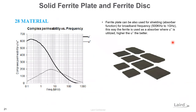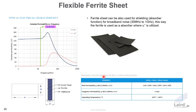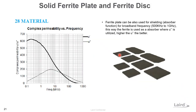Laird also offers solid-state ferrite plates and ferrite disks, similar to ferrite sheet solutions, functioning as absorbers for a similar frequency range up to about 1 GHz. The ferrite sheet is very thin but flexible and easy to apply, though limited by thickness. Solid-state ferrite plates can be very thick and therefore more effective at tackling EMI radiated noise, but they are rigid ceramic materials requiring more careful handling.